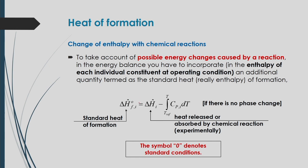The heat of formation is defined by the equation: ΔHF at standard conditions equals ΔHI minus the sensible heat due to temperature differences. Here, ΔHF is the standard heat of formation at 298 K and 1 atmosphere. ΔHI is the heat released or absorbed by the chemical reaction, obtained experimentally. After obtaining the heat of reaction experimentally, we subtract the sensible heat over a certain temperature range to get the heat of formation.